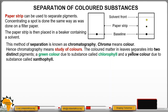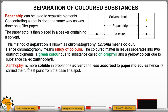The colored matter in leaves separates into two distinct pigments: a green color due to the substance called chlorophyll, and a yellow color due to the substance called xanthophyll. Xanthophyll is more soluble in propanol solvent and less adsorbent to the filter paper molecules. Hence, it is carried the furthest point from the baseline. Because it is more soluble, it moves with the moving solvent.